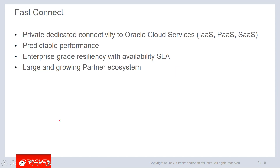FastConnect is a private, dedicated connection between OCI and a customer's on-premises infrastructure. This means we have a dedicated lease line, which allows for predictable performance and lends itself to enterprise-grade resiliency, which includes that service level agreement. We have a large and growing partner ecosystem, with providers like Euconex and Megaport and others that are coming online.